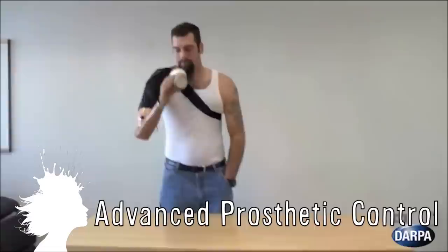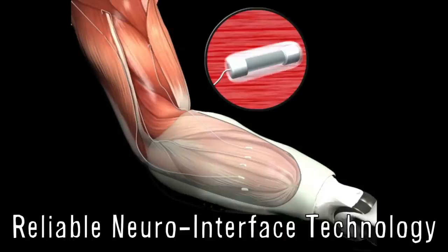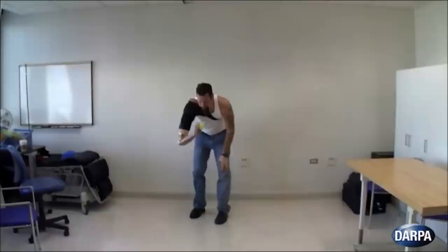DARPA has created new nerve and muscle interfaces that can be controlled directly through amputees' existing nerves. The project is called ReNet, Reliable Neuro Interface Technology, and they're hoping to not only create high performance interfaces that are reliable, they want to provide sensory feedback that would also give the user the ability to feel.